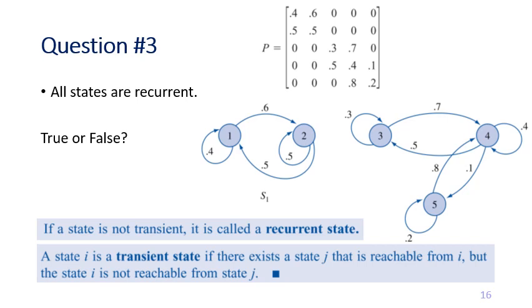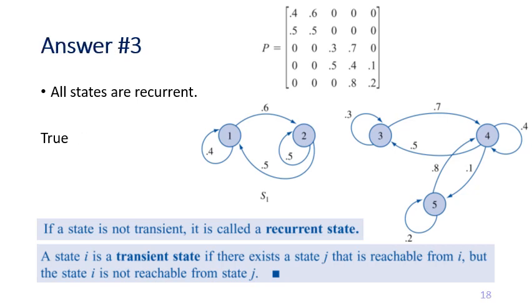The third question: all states in this Markov chain are recurrent — is it true or false? The answer is true. All states in this example are recurrent and not transient, because for every state you can always leave and then come back again. There is no way to be unable to return to where you started, so for all nodes you can always leave and find a way back. That's why all states here are all recurrent.